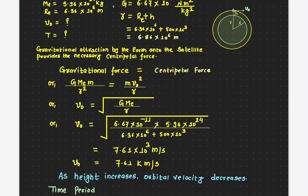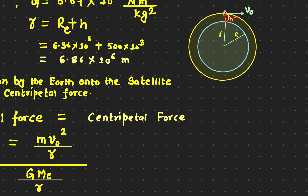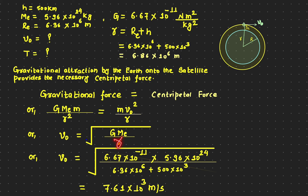A 5000 kg satellite or a 5 kg satellite orbiting at 500 km from the Earth's surface will have exactly the same orbital velocity. Also important: if the height increases — for example from 500 km to 800 km — as r increases, the orbital velocity decreases. So launching a satellite to a greater height means a smaller orbital velocity, and closer to Earth the orbital velocity must be higher.